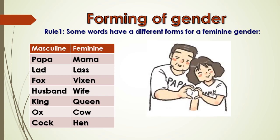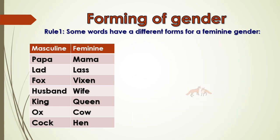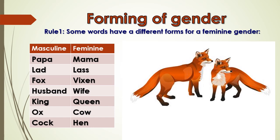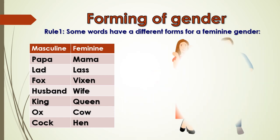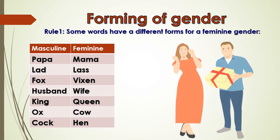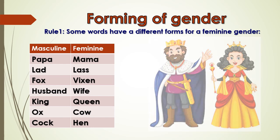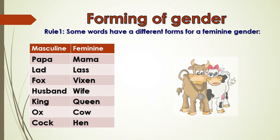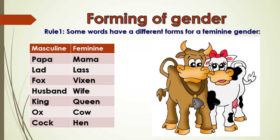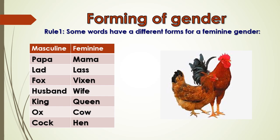For example: papa – mama; lad – lass; fox – vixen; husband – wife; king – queen; bull – cow; cock – hen.